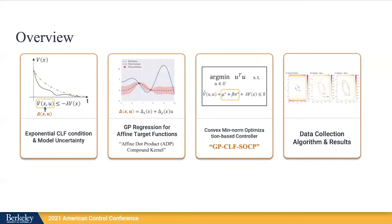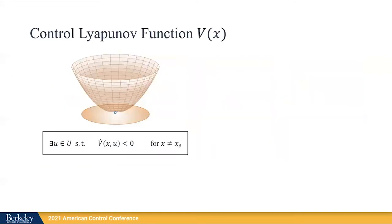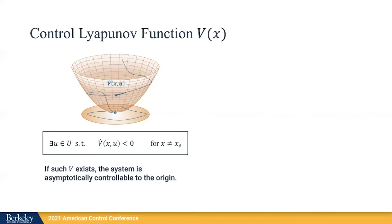Now, we will go into more details of each component of our framework. So this is a brief overview of control Lyapunov function. If V is positive everywhere except for the origin, and if you can always choose a control input that renders V-dot to be negative except at the origin, V is a valid control Lyapunov function. Such U will make the trajectory converge to the origin. More formally, if such CLF exists, the system is asymptotically controllable to the origin.